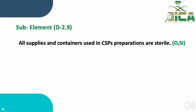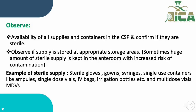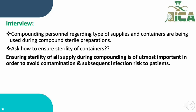Sub-element D.2.9 states that all supplies and containers used in the compound sterile preparation area are sterile, and this sub-element is evaluated through observation and staff interview. We observe the availability of all supplies and containers and confirm whether they are sterile, and whether supplies are stored in appropriate storage areas. Note that a large amount of sterile supplies kept in the anteroom increases the risk of contamination. We can also interview compound sterile preparation area personnel regarding the types of supplies and containers used, how they ensure sterility of containers, and give scoring based on their responses.